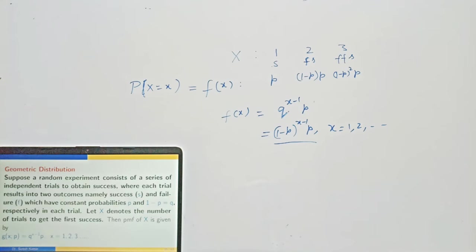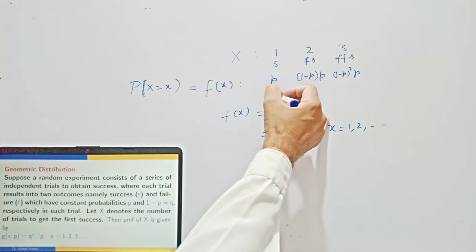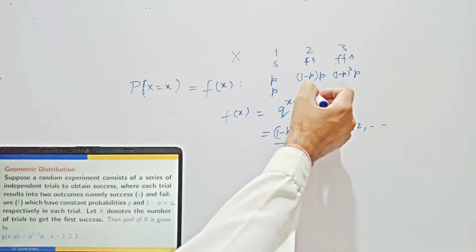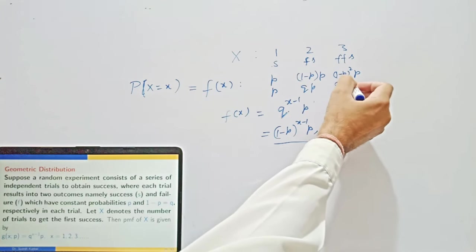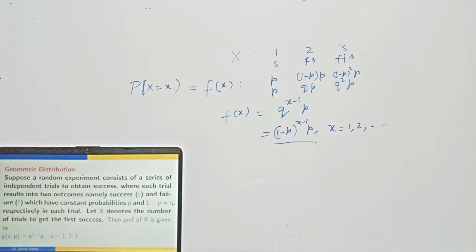This distribution is called geometric distribution. Why the name geometric? If you see the successive probabilities P, QP, Q²P, these are in GP — a geometric progression with common ratio Q. So this is called geometric distribution because the probabilities appear in a GP.